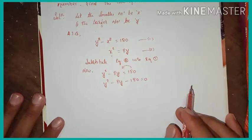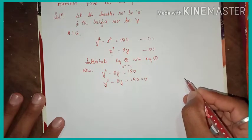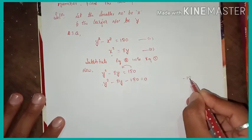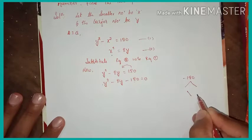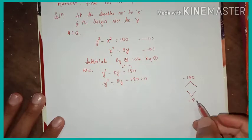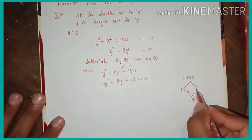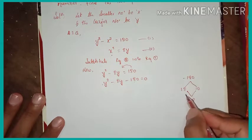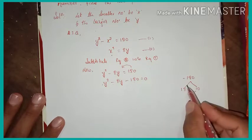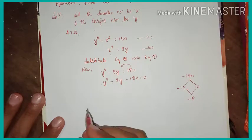This equation is in the form of ax squared plus bx plus c, a quadratic equation with one variable. We can use the factorization method. The product of 1 and negative 180 is negative 180, and we need factors that add to negative 8. Taking 18 and 10: 18 times 10 is 180 and 18 minus 10 is 8, so we use negative 18 and positive 10.